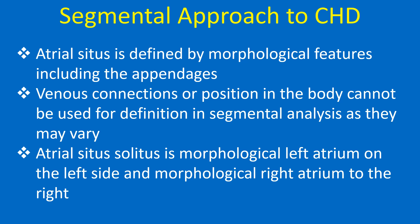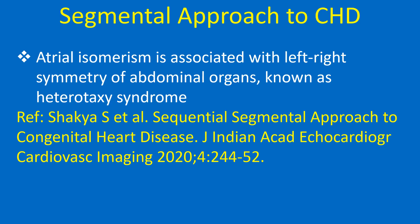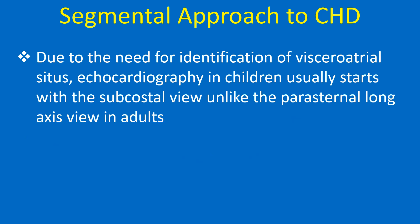Atrial situs solitus is morphological left atrium on the left side and morphological right atrium to the right. The reverse pattern is atrial situs inversus. In atrial situs ambiguous or atrial isomerism, both atria will be either morphological right atrium or left atrium. Atrial isomerism is associated with left-right symmetry of abdominal organs known as heterotaxis syndrome. Due to the need for identification of viscero-atrial situs, echocardiography in children usually starts with the subcostal view, unlike the parasternal long axis view in adults.